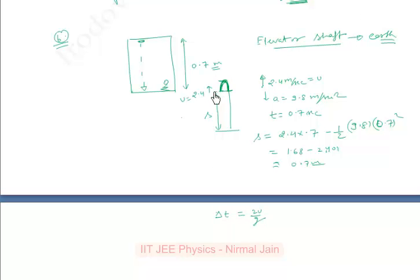If I take it as reference ground reference, then h will be u squared by 2g. So this will be the additional distance that we have to add in this 0.7.